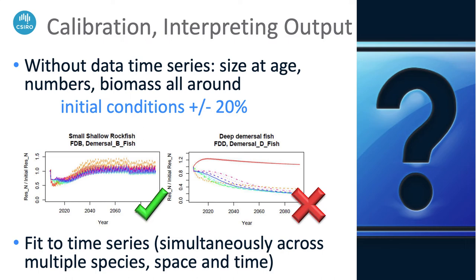This is some example output where things have been calibrated well — there's a bit of a burn-in as the model works out its numerics, but through the rest of the projection they are fairly stable. This is an example of where it's not working well — the young of the year are doing okay but everything else is dying off. These are the things to look for.